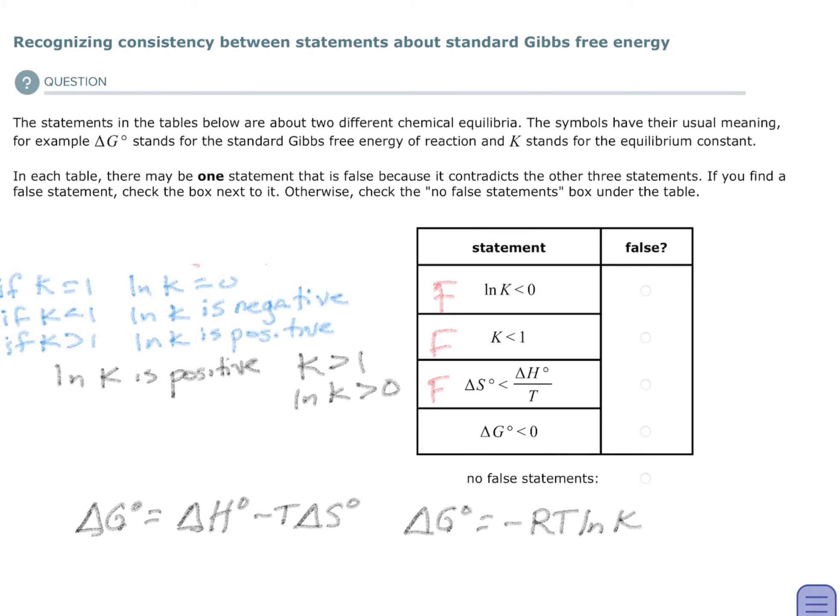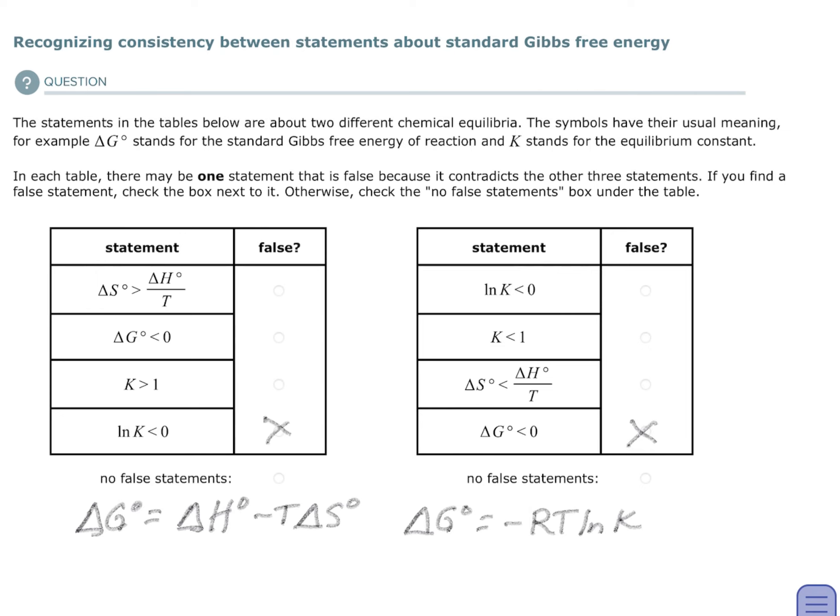So in the case that everything is false, what's really false is that delta G is less than zero. If all of them are false, and only one of them is supposed to be false according to the directions, that means that all of the other ones are actually true, and the one that's false is that the Gibbs standard energy is less than zero.